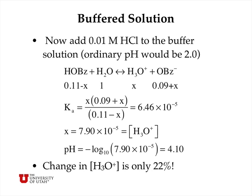This gives us a pH of 4.1 instead of the 4.19 we had before. So we have a relatively small change in pH, and we find that the hydronium ion concentration has changed only 22% compared with 5 orders of magnitude that it would have been for a neutral solution. That's a dramatic difference.